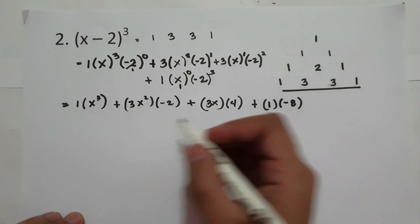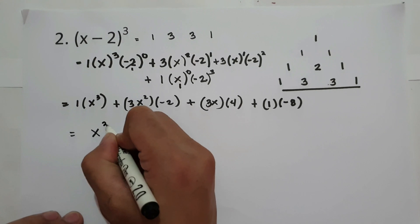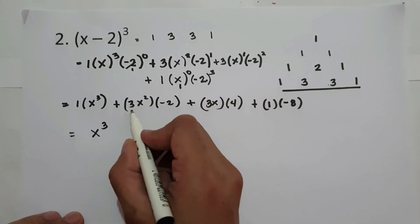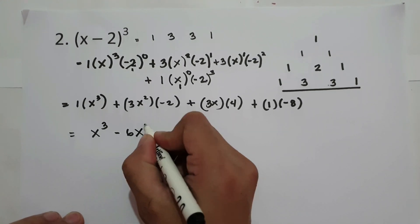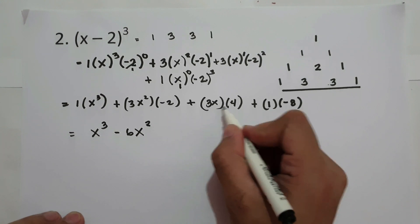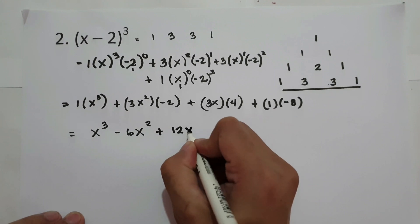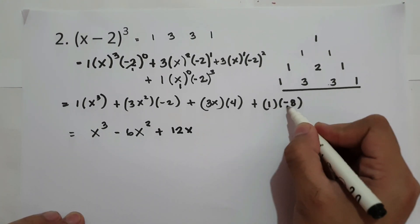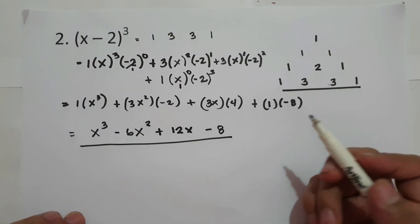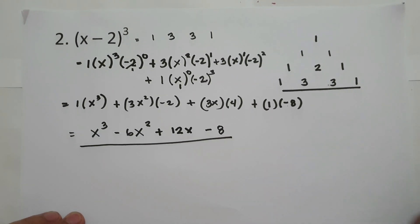To simplify our answer: 1 times x cubed is simply x cubed. Then negative 2 times positive 3 is negative 6, giving negative 6x squared. Then 3x times 4 is 12x. Then 1 times negative 8 is negative 8. So our final answer is x cubed minus 6x squared plus 12x minus 8.